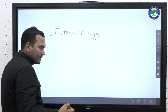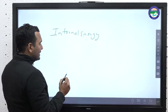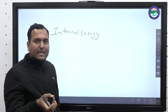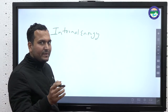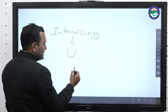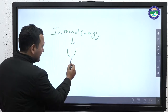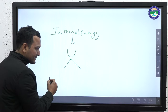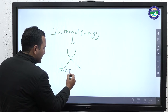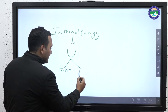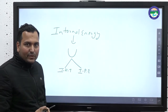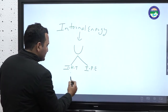Internal energy. It means if we talk about the internal property of a system, it is called internal energy. This is basically of two parts. One is kinetic energy and one is potential energy. So we will define internal kinetic energy (IKE) and internal potential energy (IPE).